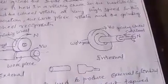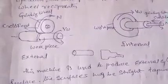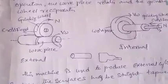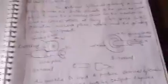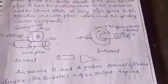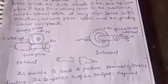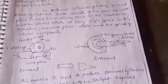The internal grinding machine is used to produce internal cylindrical surfaces. The surface may be straight or tapered. The workpiece may be straight. Different types of grinding wheels are used: tapered grinding wheels for tapered operations, flat grinding wheels for flat operations, and circular grinding wheels for circular operations.